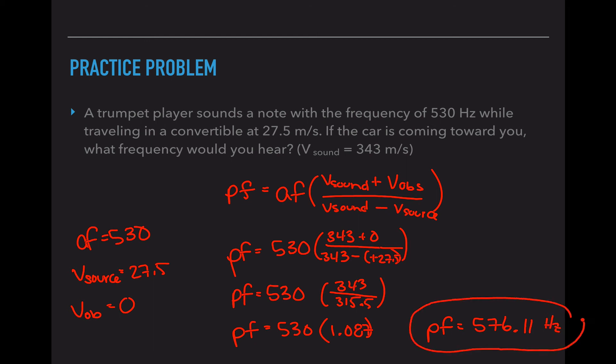Now let's think that through. As the source moves towards our observer, the wave crests are bunching up together, so the wavelength goes down, so the frequency goes up. So here our frequency went up, so that's kind of a quick check to make sure we did our math properly. So the perceived frequency of this trumpet player as he travels towards you in the convertible is 576.11 hertz.